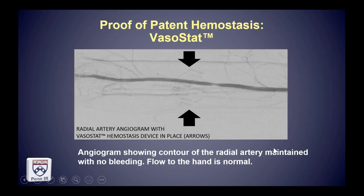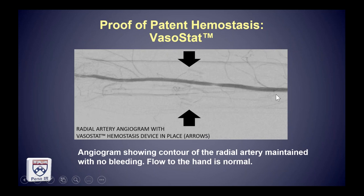This is an angiogram of a patient who underwent complex multi-level upper extremity revascularization involving both brachial and radial access. The brachial access was maintained while the radial access was removed, allowing an arteriogram of the radial artery. Here is where the VasoStat is, and we have perfectly preserved flow to the hand while the device is in place — no bleeding, no extravasation, perfect hemostasis.